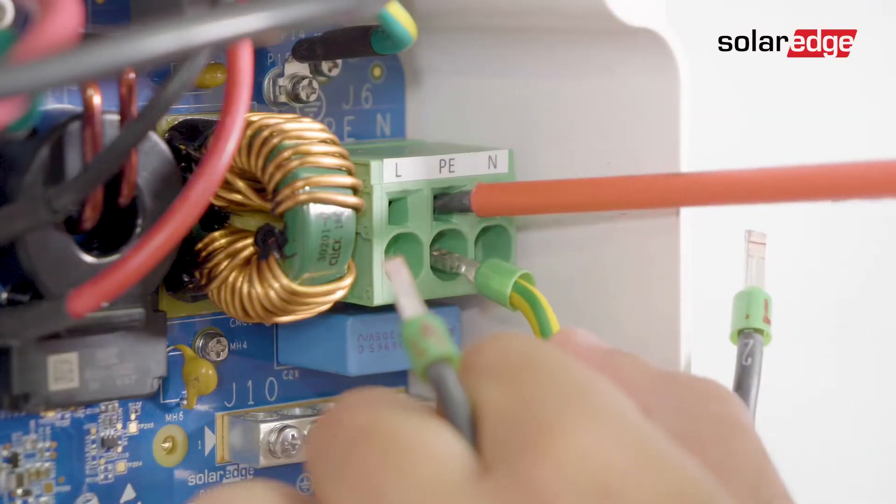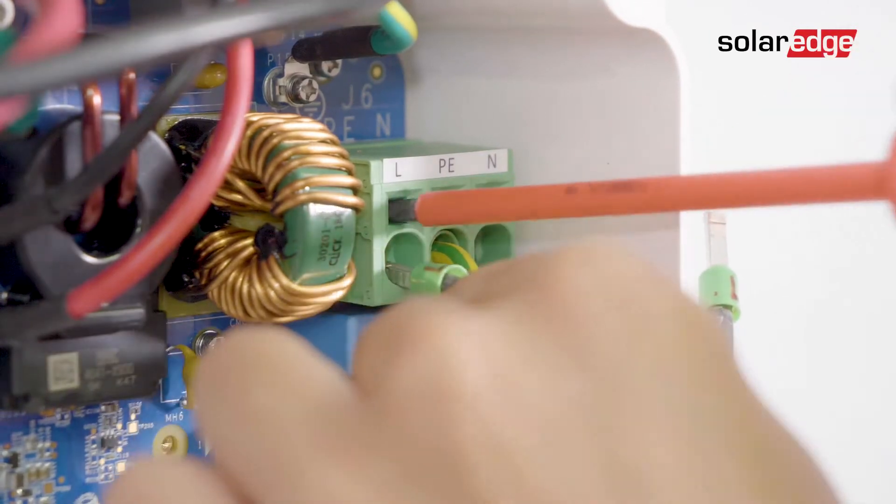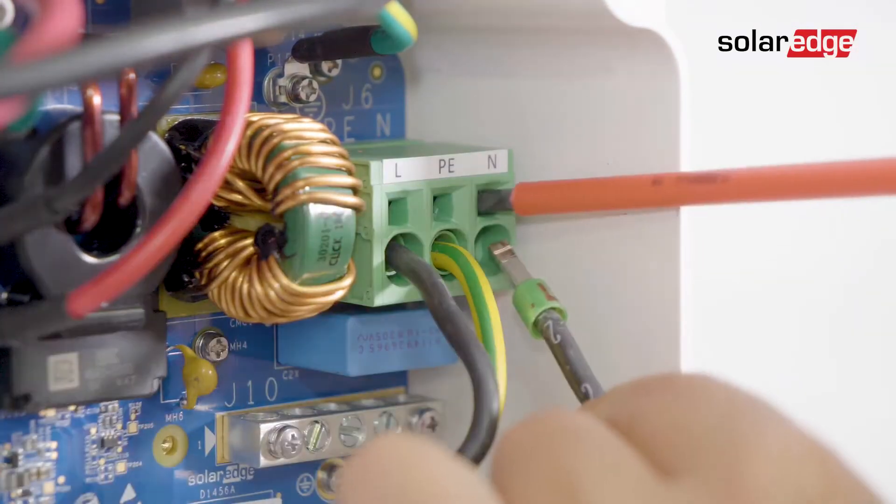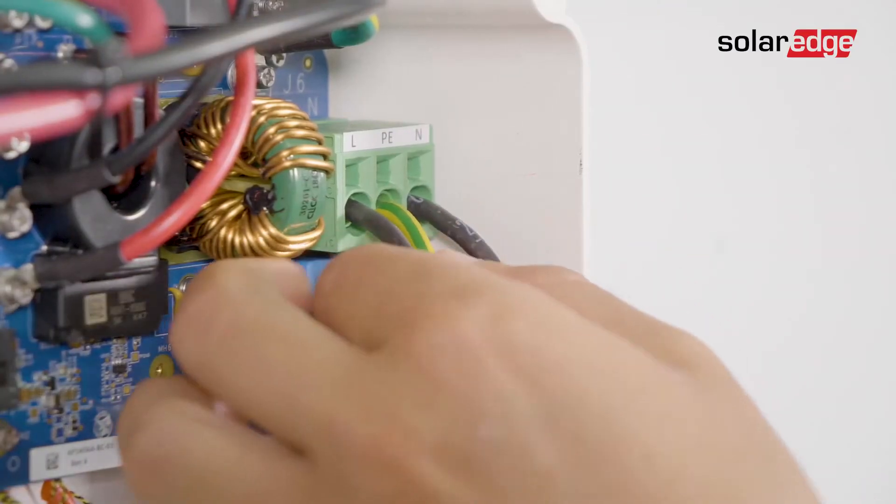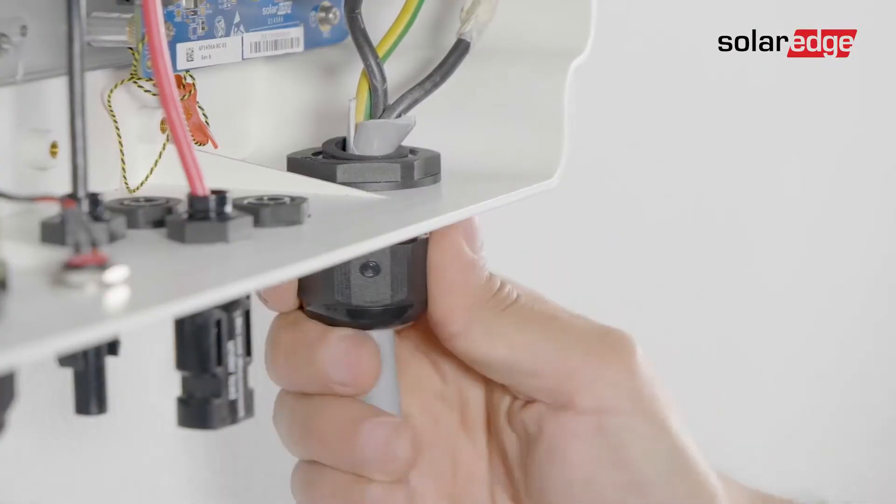Connect the AC wires according to the labels on the terminal block. Make sure that the AC cables are firmly connected and close the AC gland.